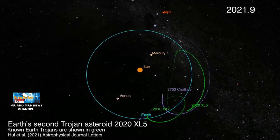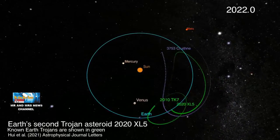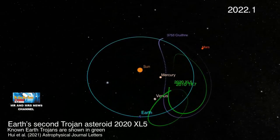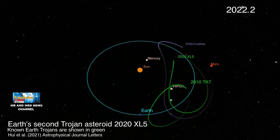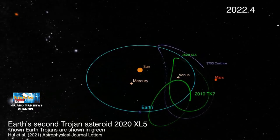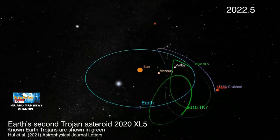Dijuluki sebagai asteroid Trojan, dari kisah perang Trojan lantaran batu angkasa semacam ini dikenal sebagai orbit yang sama dengan suatu planet dan pertama kali ditemukan di sekitar planet Jupiter.